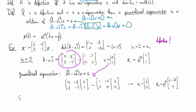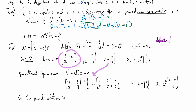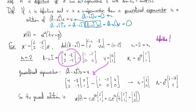The general solution is C₁ e^(2t) (2, 1) + C₂ e^(2t) [t·(2, 1) + (1/2, 0)]. It's neat to notice that the repeated eigenvalue — which led to resonance in previous situations — consequently produces a solution with an extra factor of t. We see exactly the same thing showing up here.